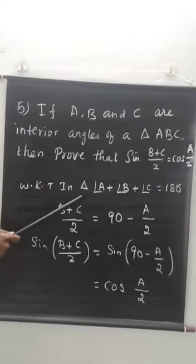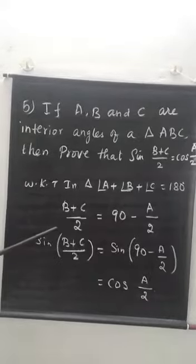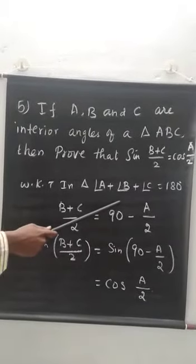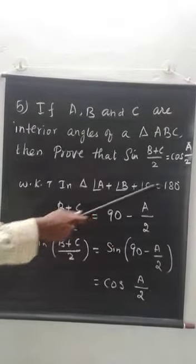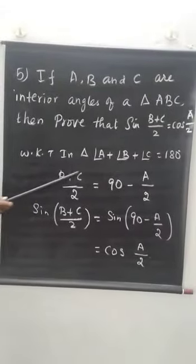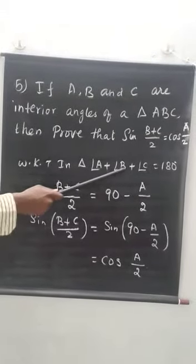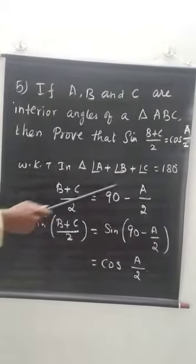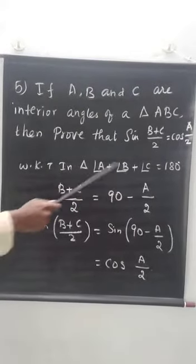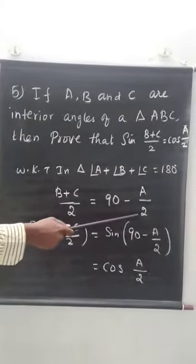In a triangle, the sum of 3 angles is 180°. So, angle A plus angle B plus angle C equals 180°. So I am going to divide it by 2. So (B+C)/2 equals 90 minus A/2. This plus A comes as minus A, divide it by 2.